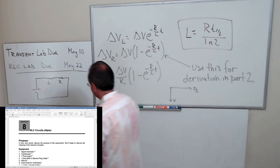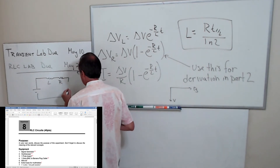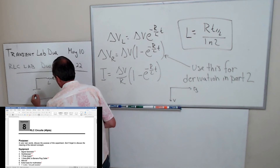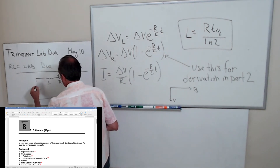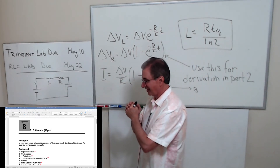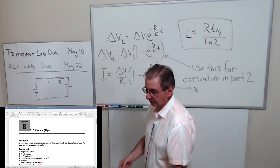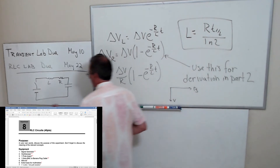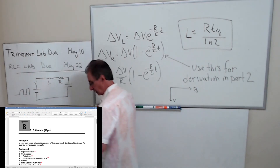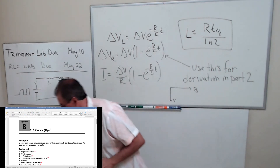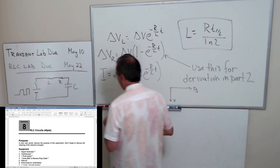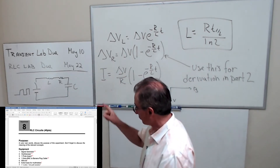I'm going to talk about the last part of the transient lab, where you put a capacitor in your circuit. In this lab we're not going to use a battery, but we're going to use the square pulse. Because if you use a battery, what you're going to see on the scope is boring — you need something that changes all the time. So you're going to input a square pulse. I need to do a little bit of math to describe the transient RLC circuit.